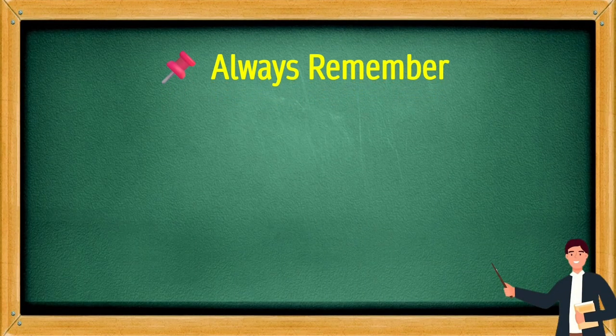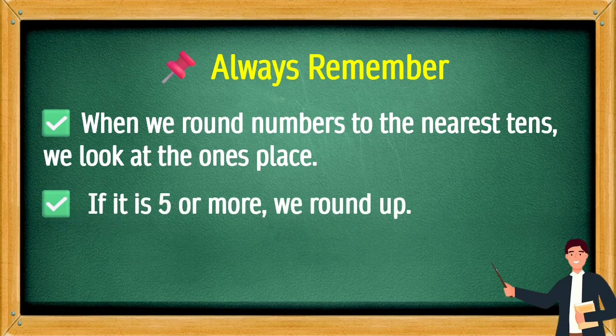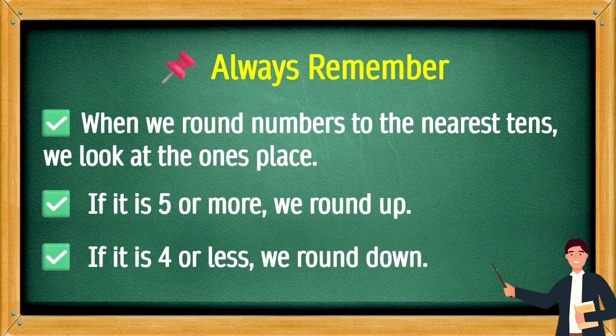Always remember, when we round numbers to the nearest tens, we look at the one's place. If it is 5 or more, we round up. If it is 4 or less, we round down.